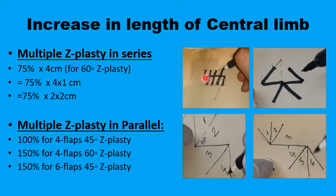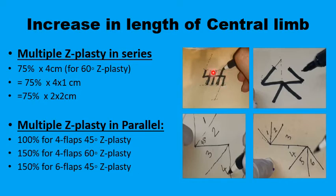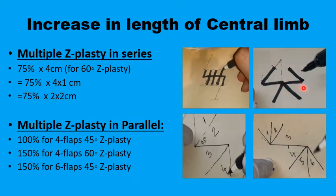Regarding how much length gain is achievable: starting with a 4 cm segment, a single Z-plasty with 60-degree angles and 4 cm limbs gives a 75% increase — an extra 3 cm. Dividing the central segment into four 1 cm Z-plasties in series gives the same total 3 cm gain, using much less tissue above and below. The same applies to the opposing version of multiple in-series Z-plasties with two 2 cm units on each side.